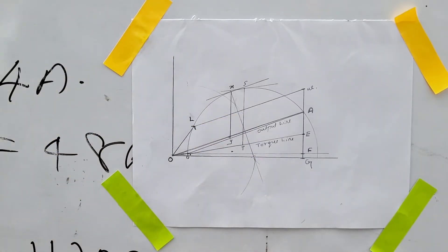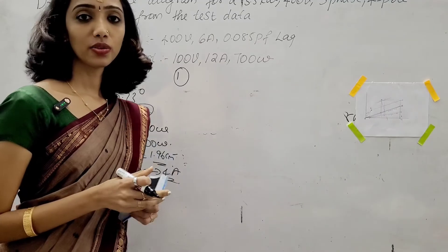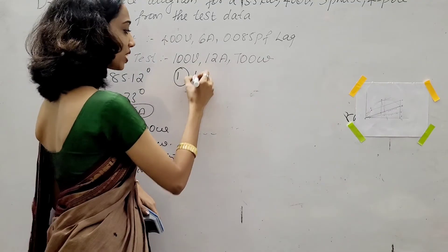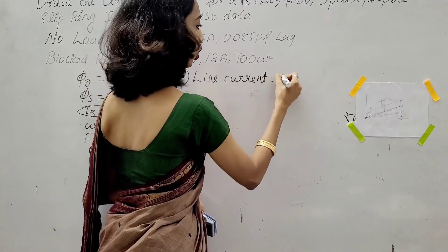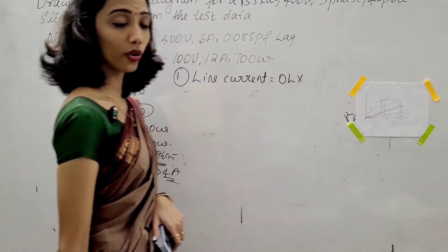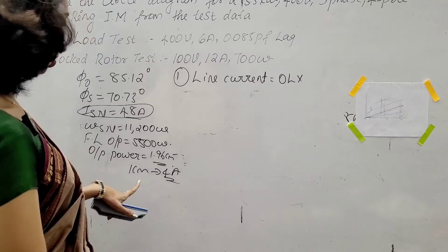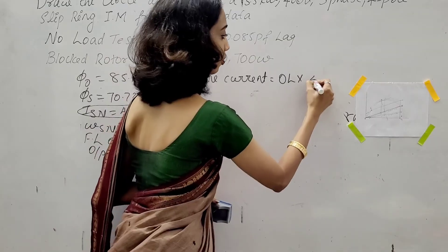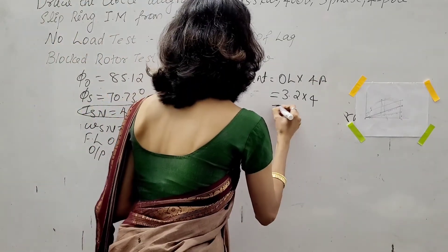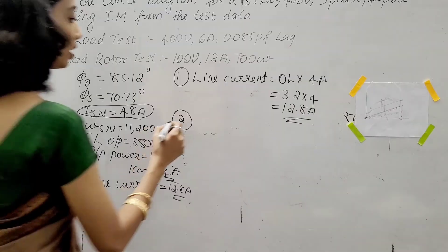From point L, we measure the output power factor angle, which is 35 degrees. The first question is to find the line current. Line current equals the OL length on the graph multiplied by the current scale of 4 ampere per centimeter, giving 12.8 ampere.